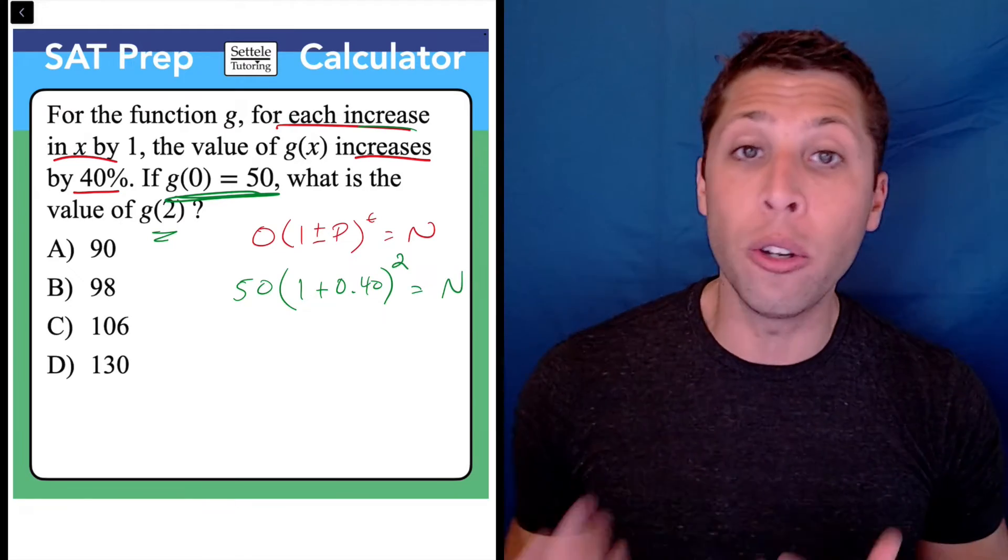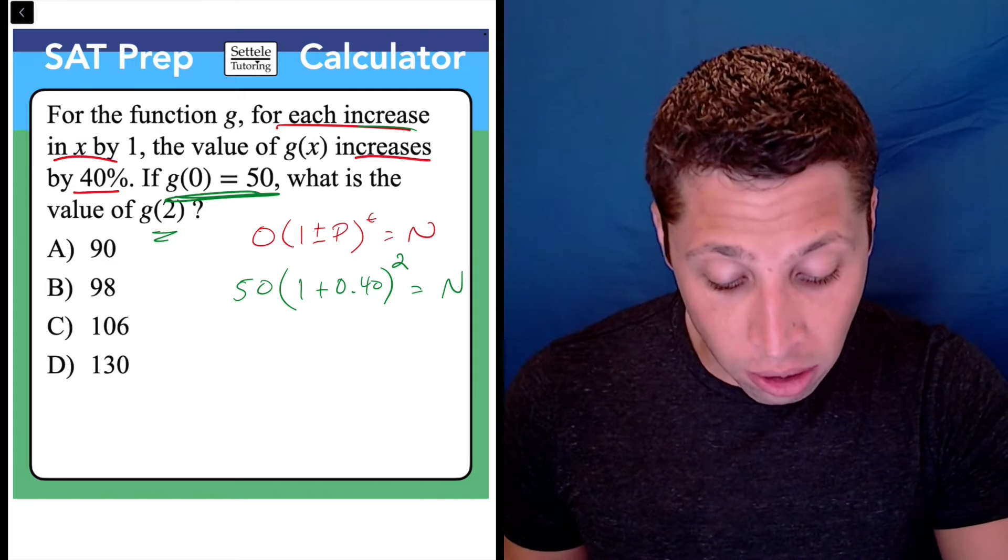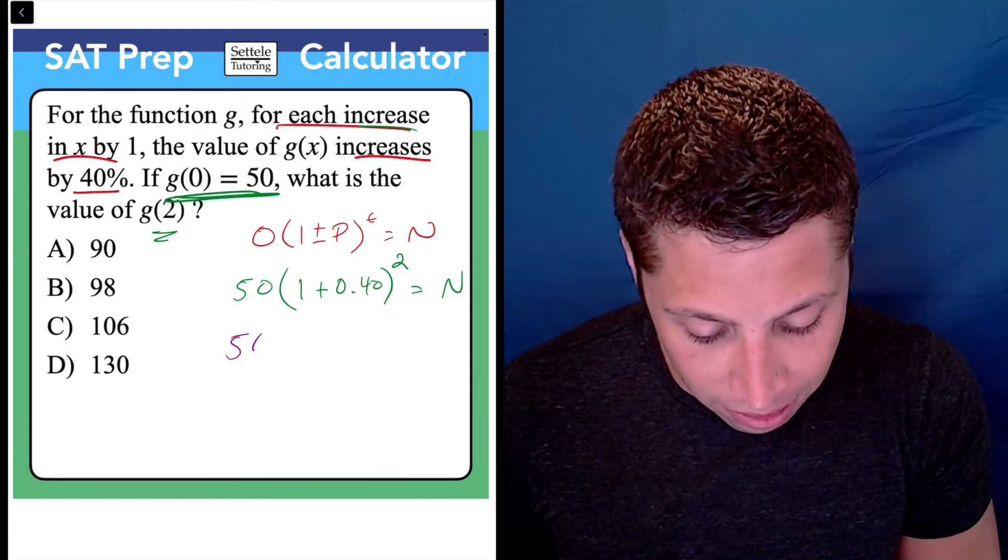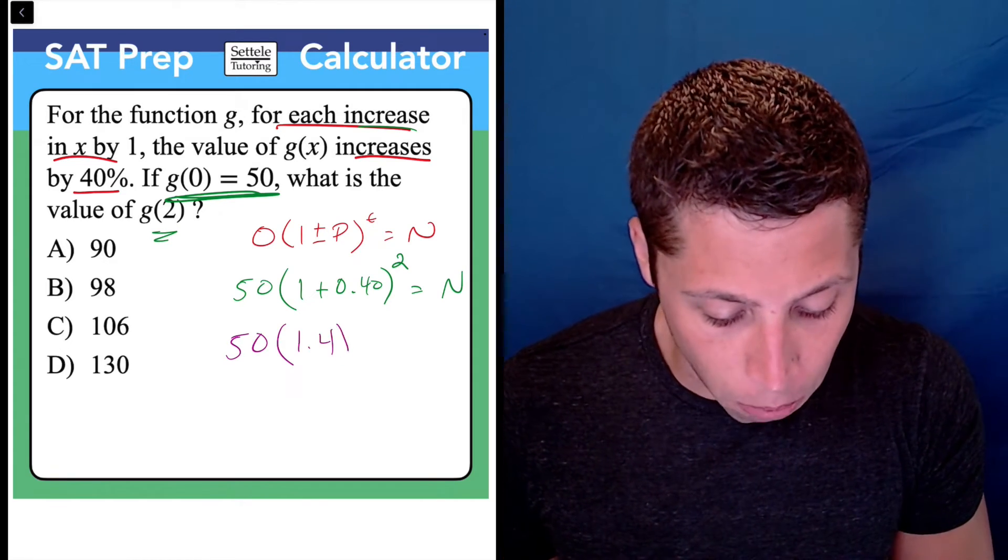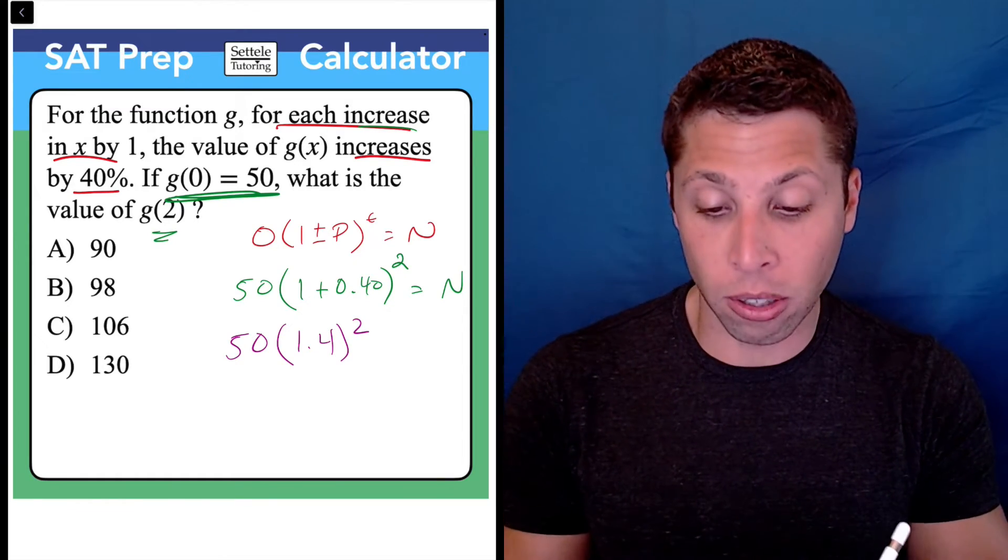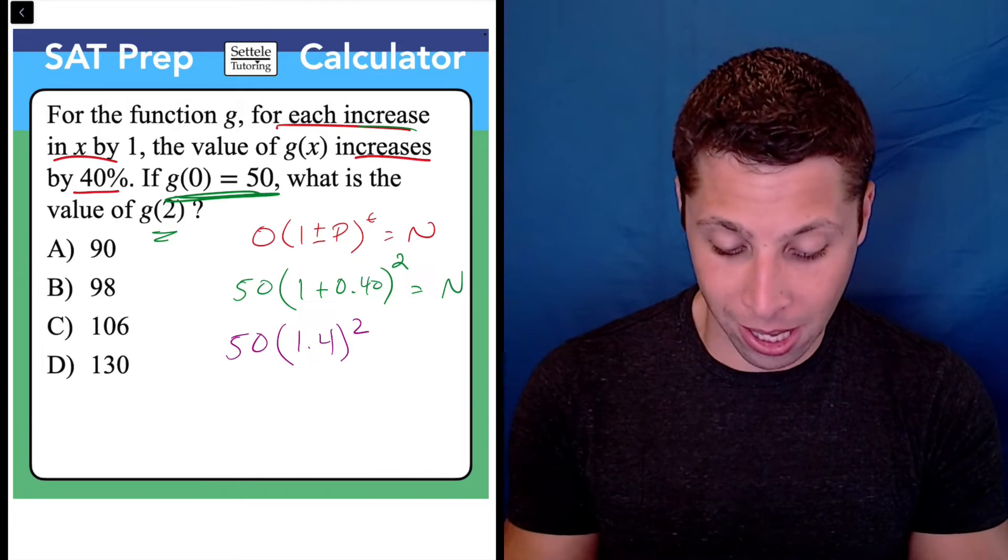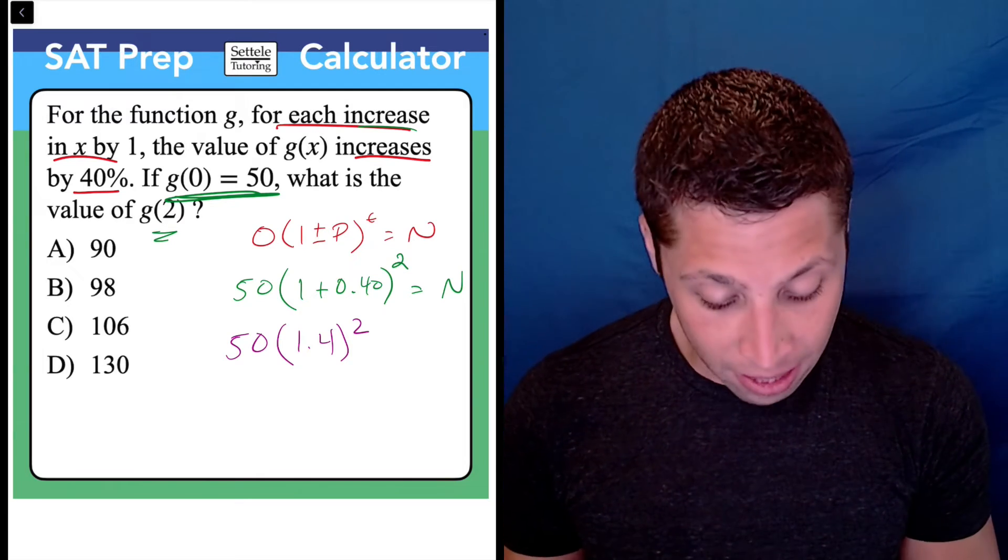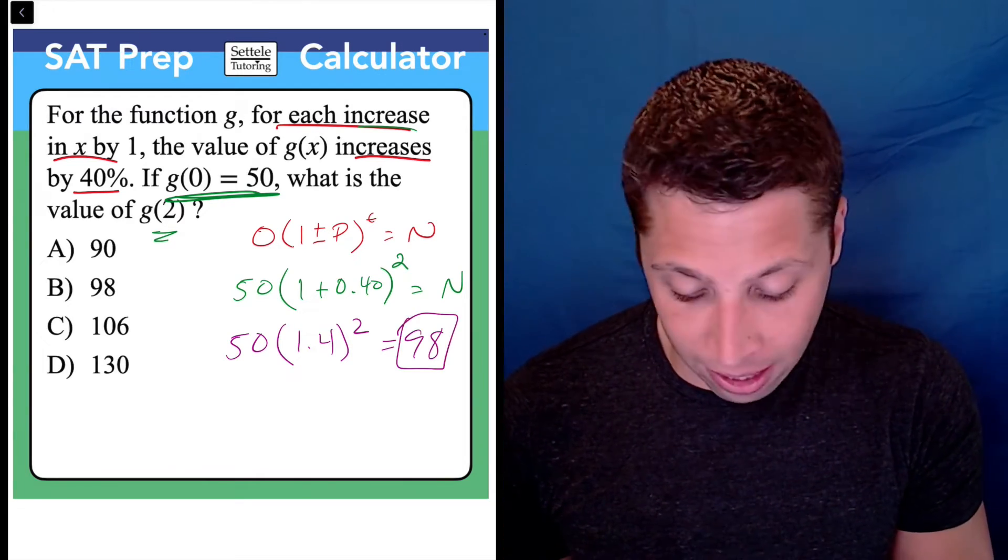Now we're solving for the new value, the result. This is where the calculator can come in, but let's simplify first. We have 1.4 squared times 50. Using the calculator: 1.4 squared is 1.96, times 50 is 98. That is our answer.